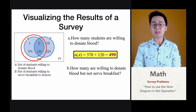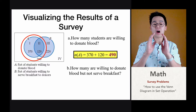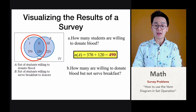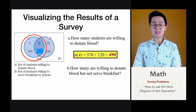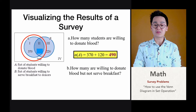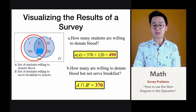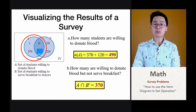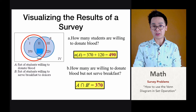For the second problem, we're counting how many are willing to donate blood but not serve breakfast. Group A represents those willing to donate blood, group B those willing to serve breakfast, and the middle represents students willing to do both. We're only counting students exclusive to donating blood, not including the intersection of A and B. So we're counting the subset A intersection B complement, which equals 370 students, or group number one.